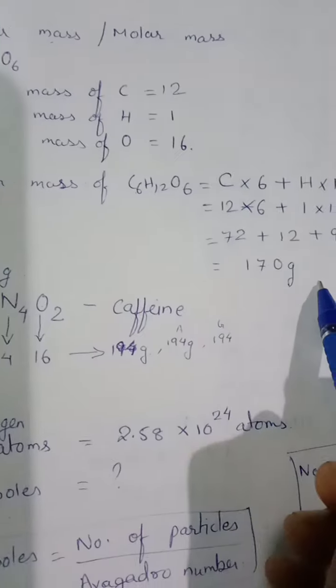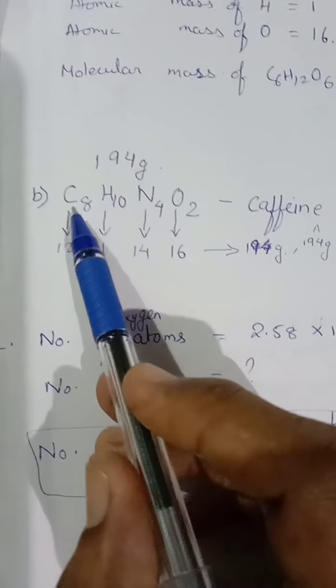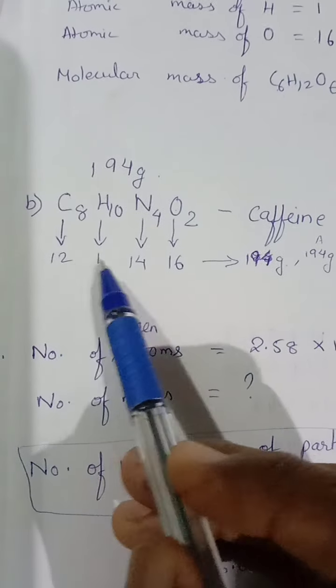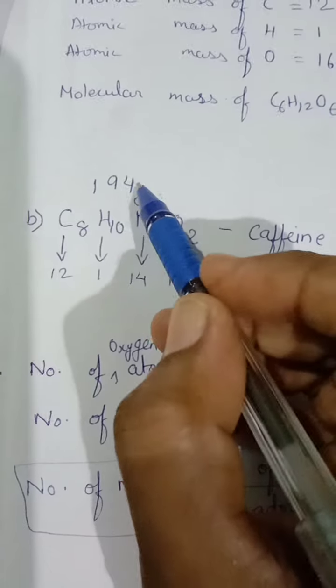Same for caffeine, C8H10N4O2. Atomic masses are 12, 1, 14, and 16. You'll get the answer 194 grams.